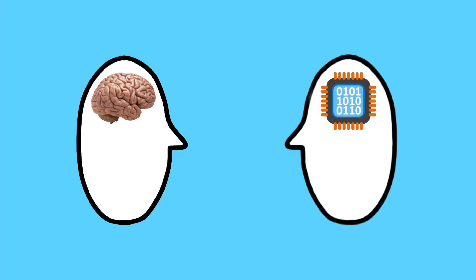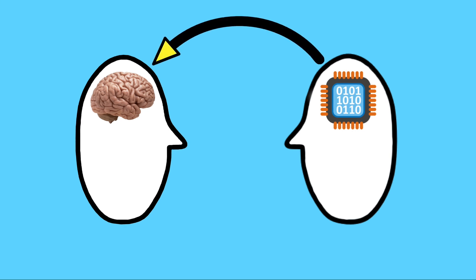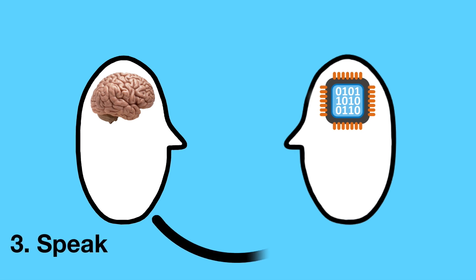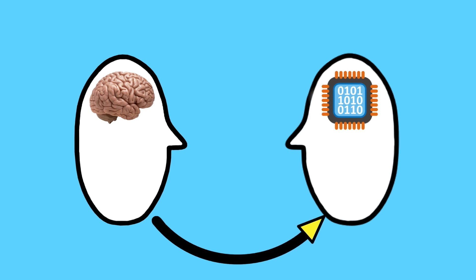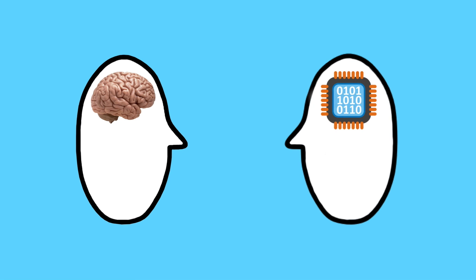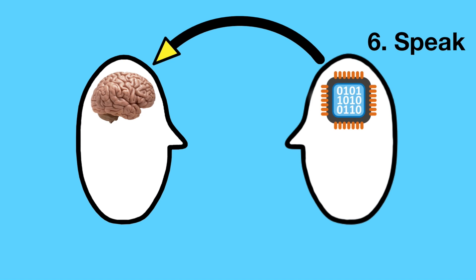So here we are, all set up for an interaction between human and computer. Step one: the computer has spoken something to the human by showing something on its screen. The human listens to what the computer is saying. Step two: the human thinks about what he's gotten from the computer and forms a reaction to it. Step three: the human speaks his reaction back to the computer. Step four: now it's the computer's turn to listen to the human. Step five: the computer thinks about what it heard using its algorithms and develops its own reaction. And finally, step six: the computer speaks its reaction back to the human using graphics, animation, and sound.